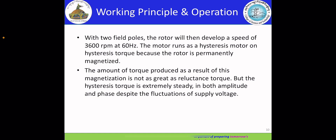As the rotor approaches synchronous speed, the frequency of the current reversal in the rotor bars decreases and the rotor becomes permanently magnetized in one direction as a result of the high retentivity of the steel rotor. With two poles, the rotor will develop a speed of 3600 RPM at a frequency of 60 Hz. The motor runs on hysteresis torque because it is permanently magnetized. The hysteresis torque is extremely steady in both amplitude and phase despite fluctuations of the speed voltage.